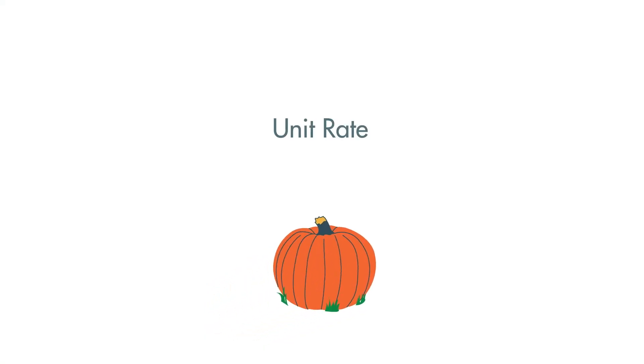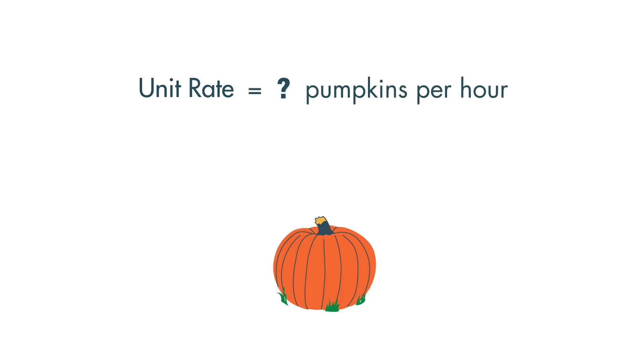A unit rate is a rate for one of something. In our example, it will be for the number of pumpkins harvested in one hour.